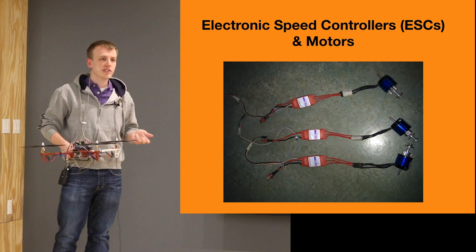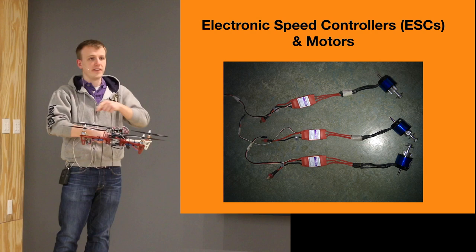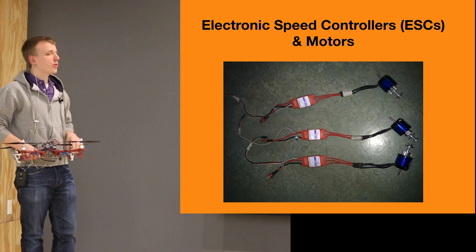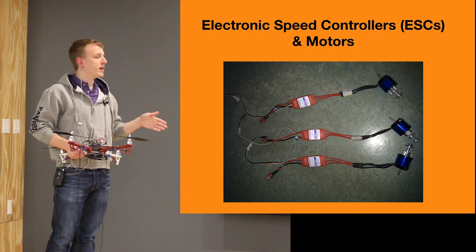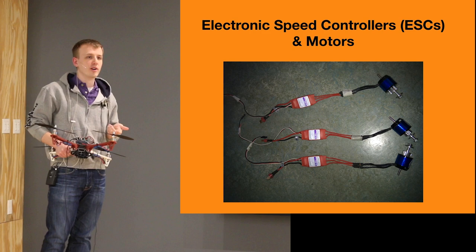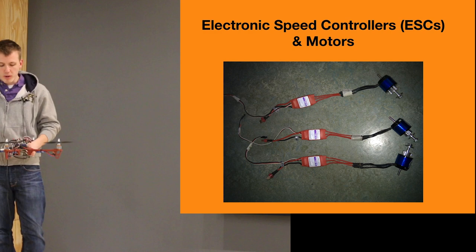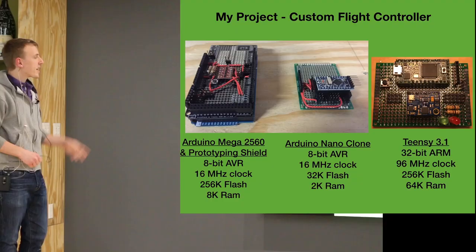Next up are the electronic speed controllers and the motors. I have my electronic speed controllers mounted on the bottoms of the arms, and the motors are mounted at the end of each arm. The electronic speed controller acts as an interface between the microprocessor and the motors. The motors run at much higher current and voltage than the processor, so the speed controller makes it easy to communicate with the motors. Basically we tell it how fast we want the motor to go and the speed controller takes care of operating the motor. The motors are brushless DC motors.